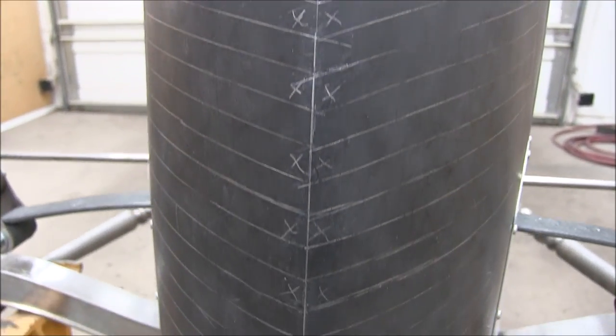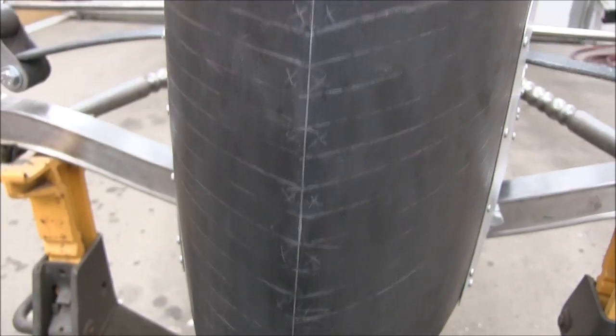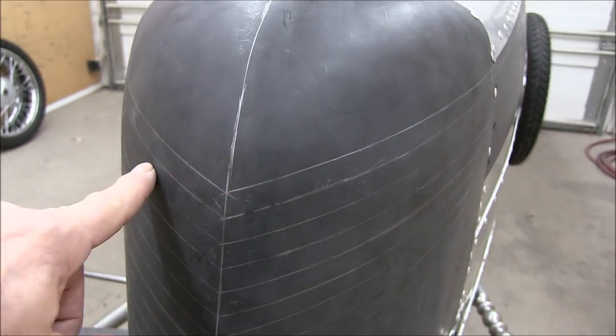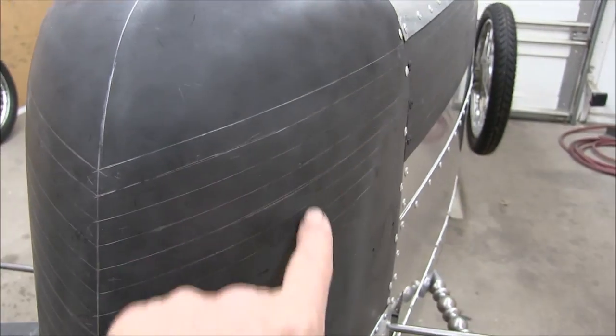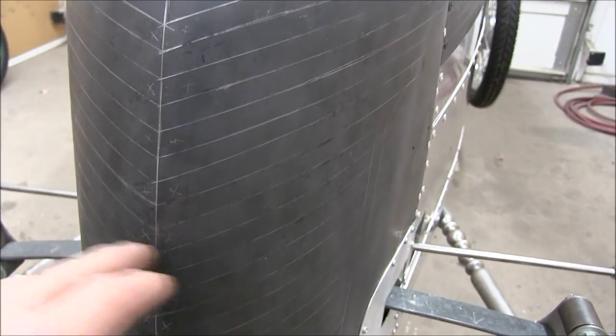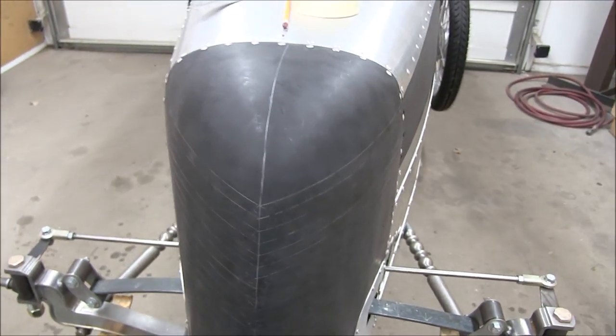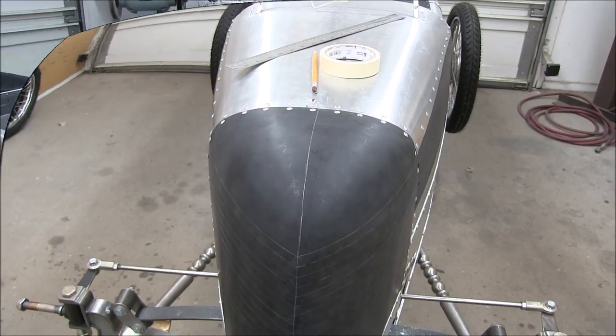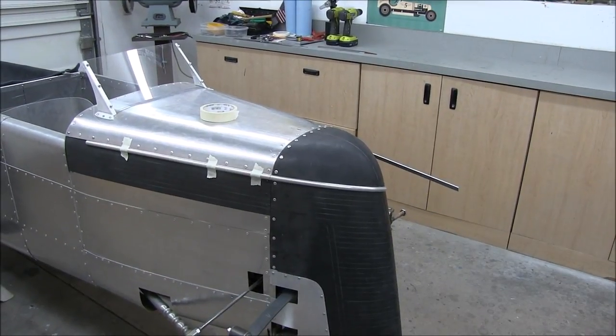So once I get this all laid out then we'll start making the bars. Here you can see the layout lines. My goal is to do the top piece, a center piece, and then the border, then I can fill in. At least that's the thinking at this point, we'll see if it works out.